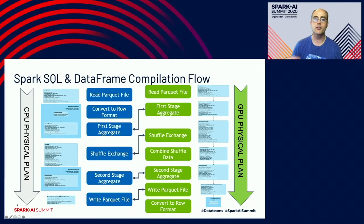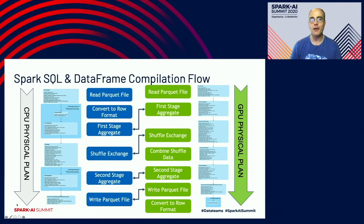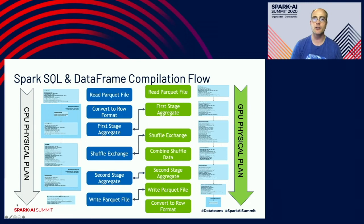There's a little bit of oddness in the GPU plan. After we write out a Parquet file, there's a conversion from columns to rows at the end. All stages inside a Spark plan have an output, and the Parquet file writer produces no output. But because of things we haven't fixed yet, we're still putting in a transition at the end to translate nothing columnar into nothing that's rows. We have plans to remove that in the future, but don't get scared when you see it — it won't impact performance in any way.